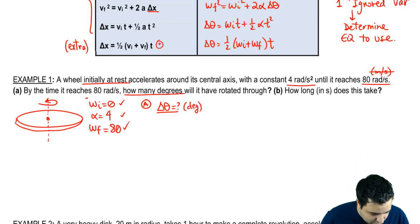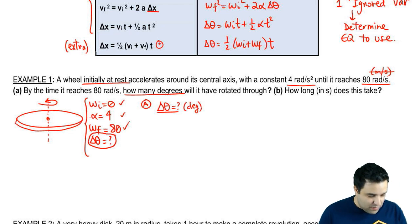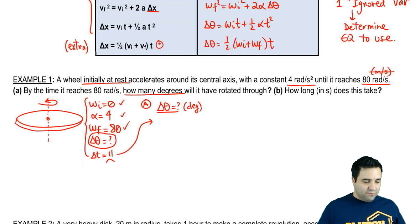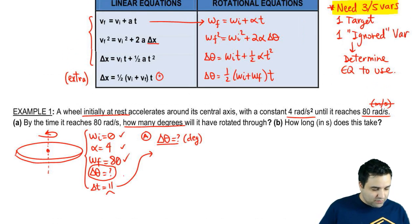So I'm going to do what I always do, which is list my five variables here. Delta theta is what we're looking for, and the variable out of the five that didn't get mentioned was delta t. So I'm going to put a little sad face here, and I'm going to pick the only equation out of the four that is missing a delta t, which is this one. There's no delta t on this one.